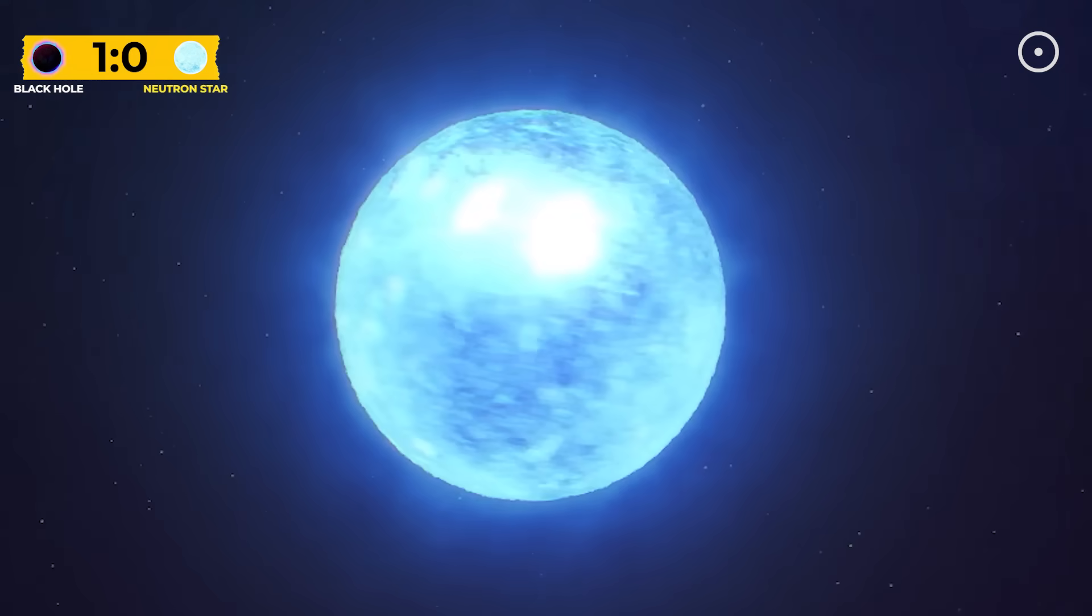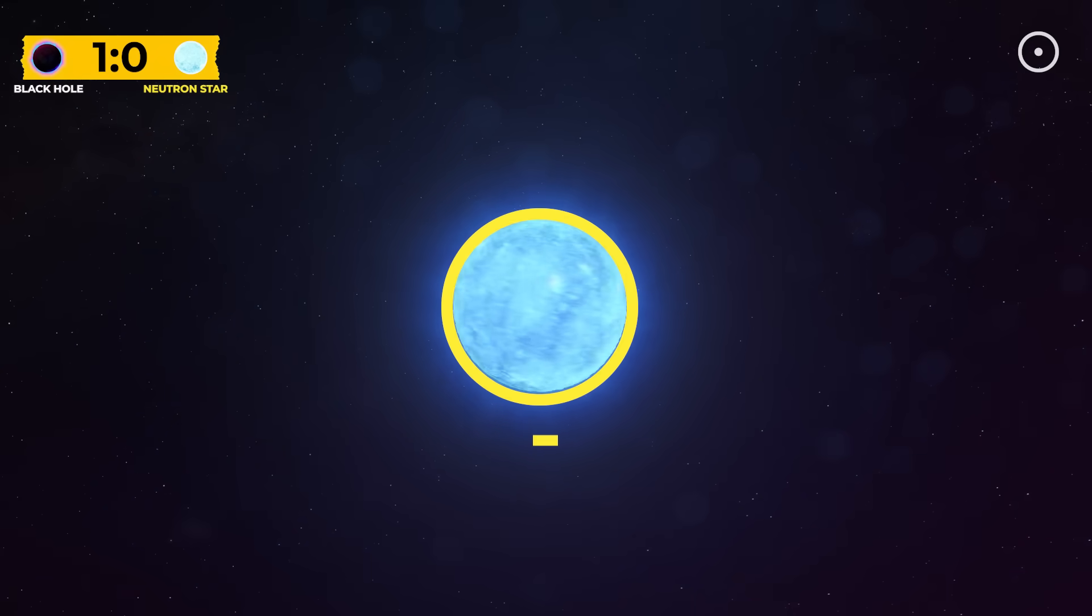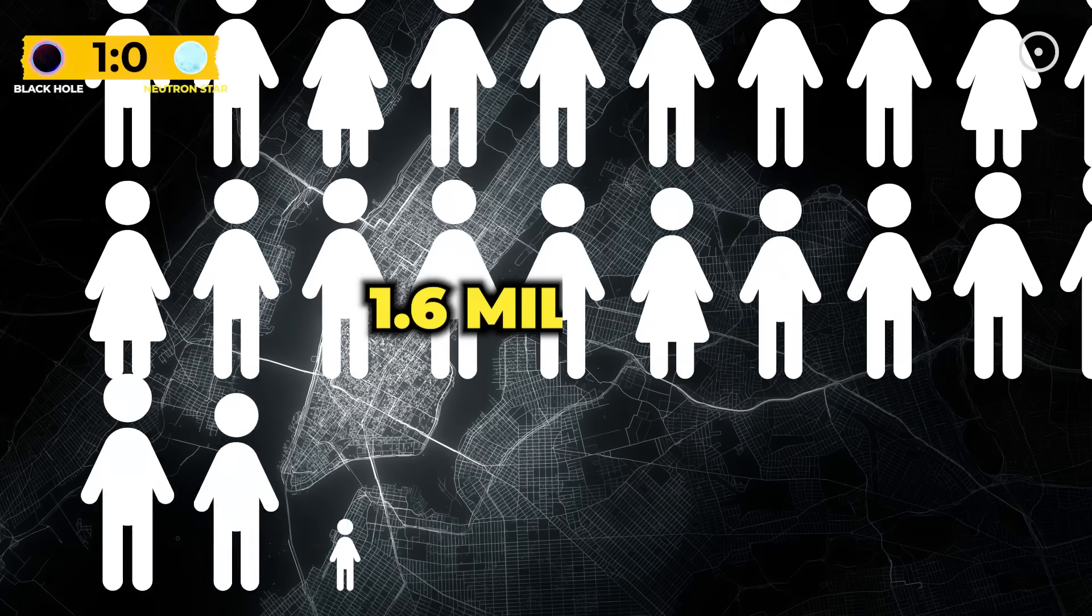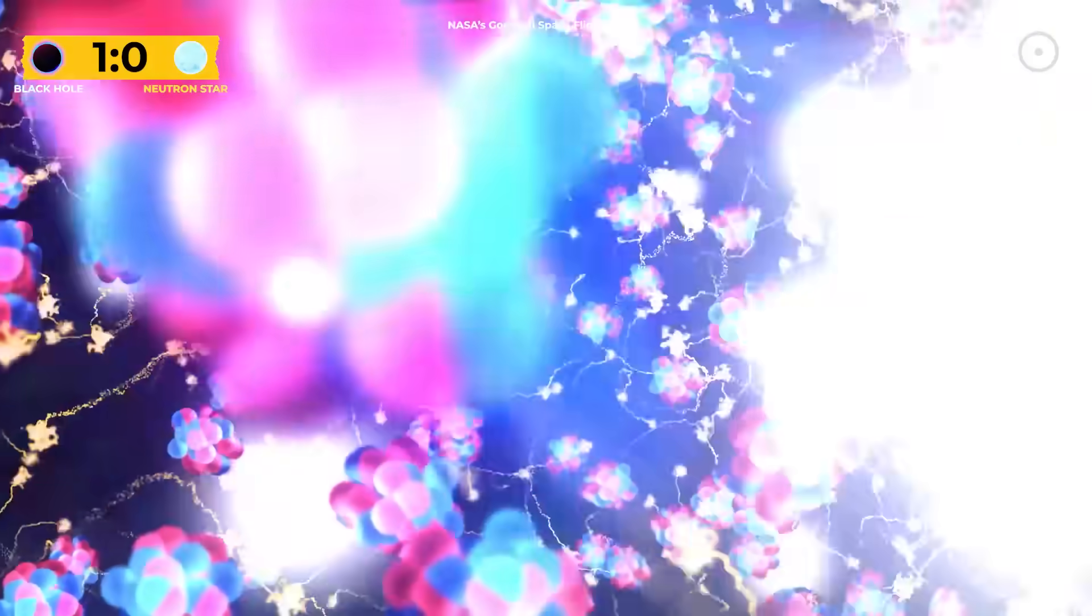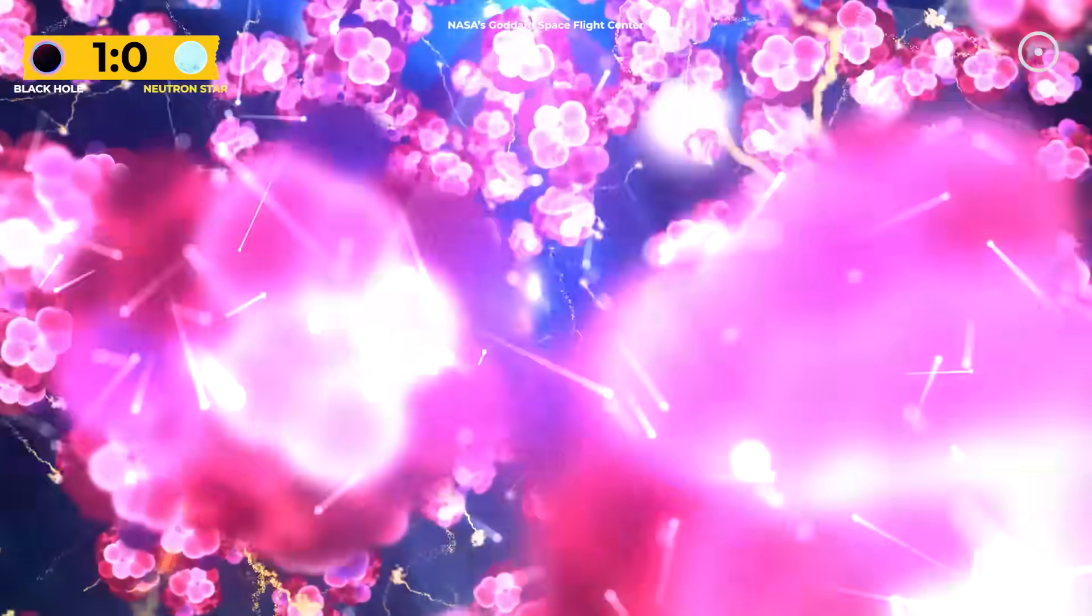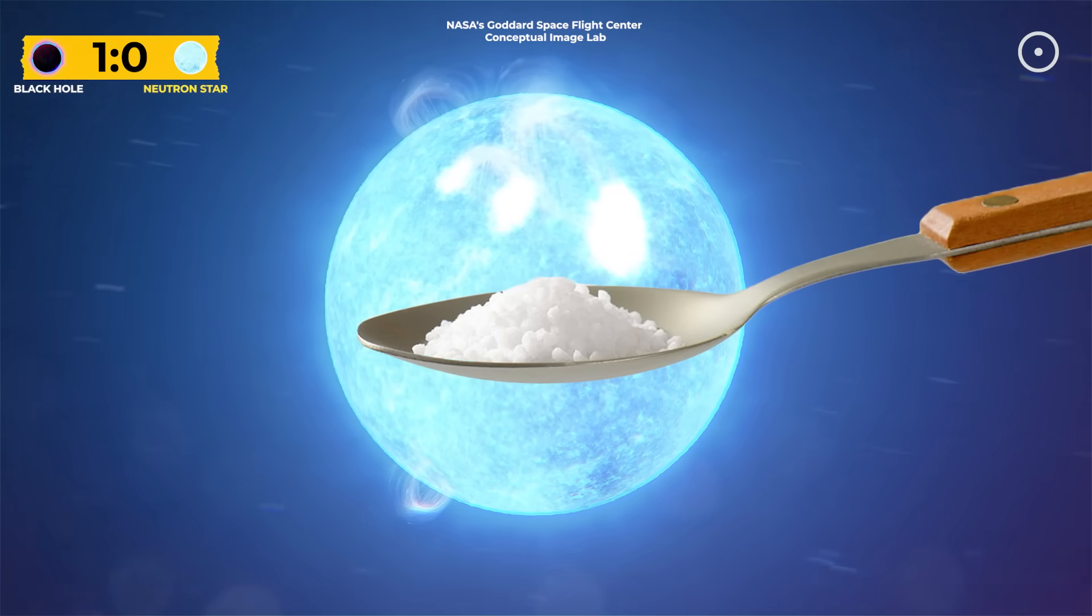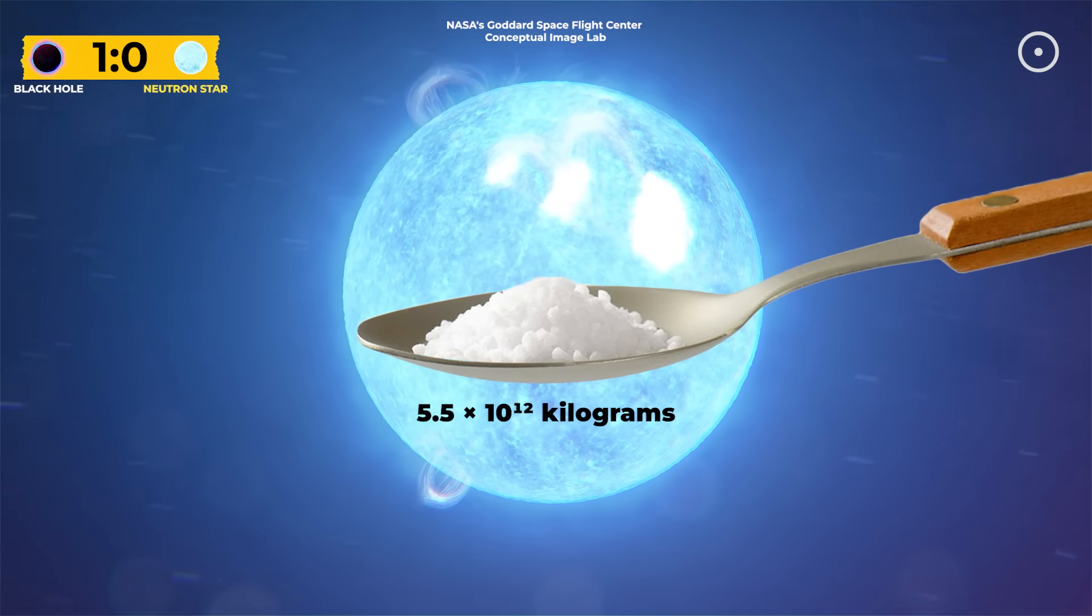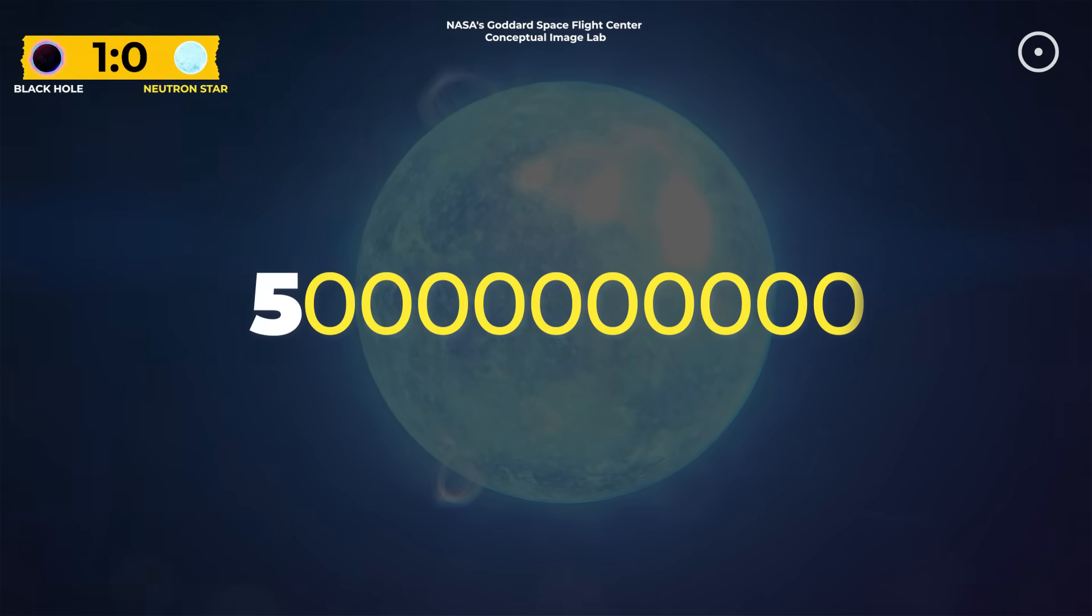A neutron star packs about 1.5 times the mass of our sun into a sphere just 20 kilometers wide. We're talking about cramming Manhattan's population into a single grain of rice. The matter is so dense that protons and electrons have been squished together to form neutrons, hence the name. A single teaspoon of neutron star material would weigh about 5.5 times 10 to the 12th kilograms. That's a 5 followed by 12 zeros. It would instantly punch through Earth and out the other side.